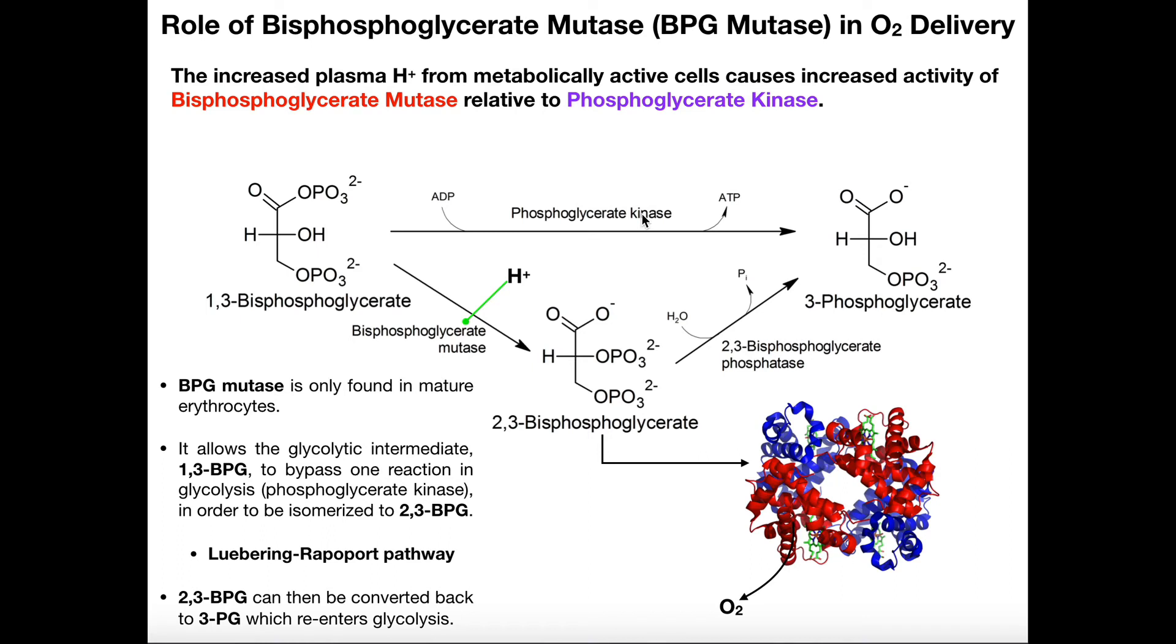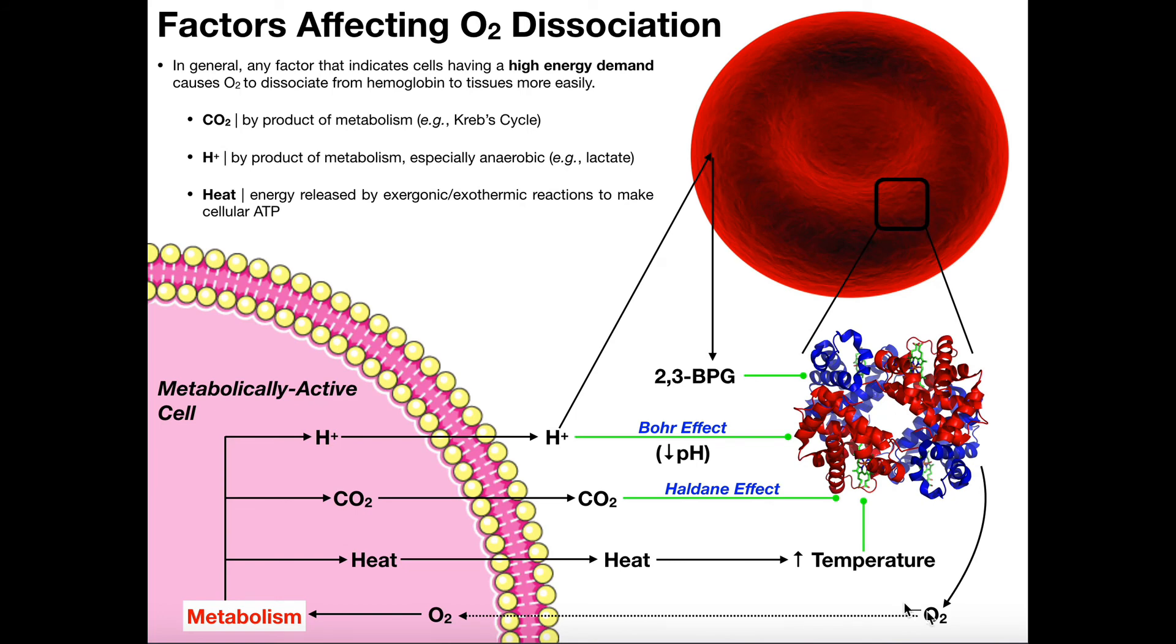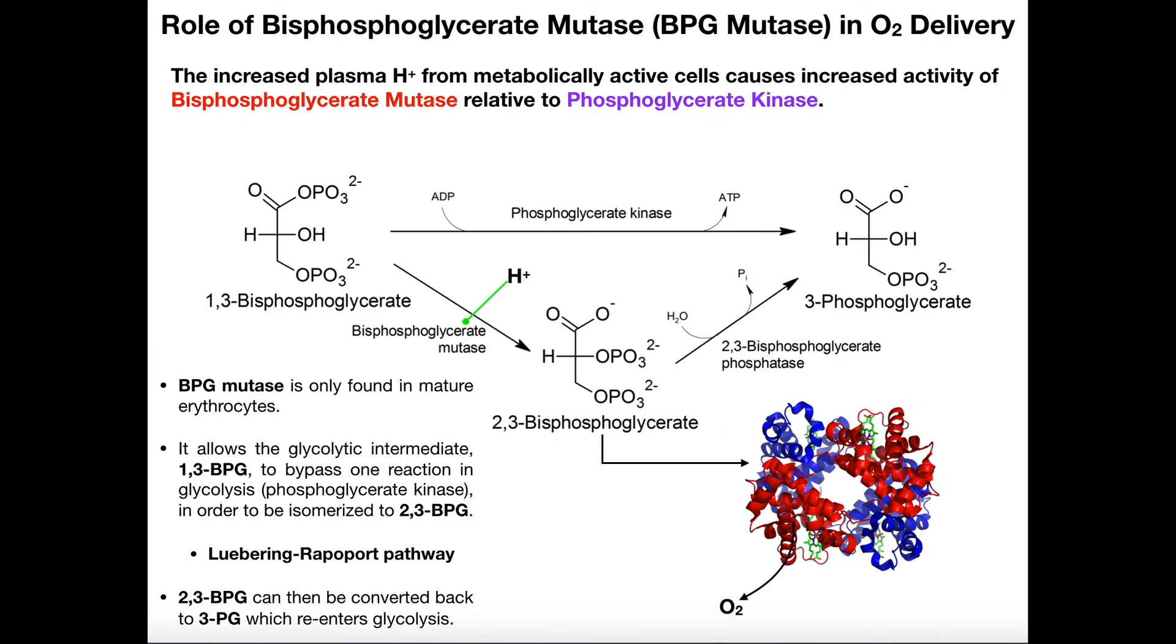There's another enzyme that only red blood cells have. Other cells do not have this enzyme. And this enzyme is called bisphosphoglycerate mutase or BPG mutase. So this actually removes 1,3-bisphosphoglycerate from glycolysis and converts it into something unique. And that's called 2,3-bisphosphoglycerate. And this molecule right here is what induces this weakened interaction between hemoglobin and oxygen. And so if oxygen dissociates, the tissues nearby can use it. Well, what's the importance of this hydrogen ion here in bisphosphoglycerate mutase?